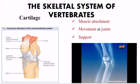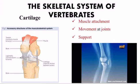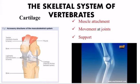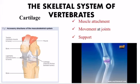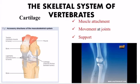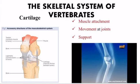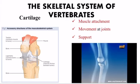Cartilage is a specialized type of connective tissue that provides a site for muscle attachment. It aids in movement at joints and it provides support.